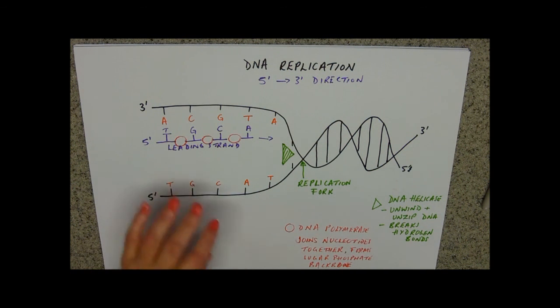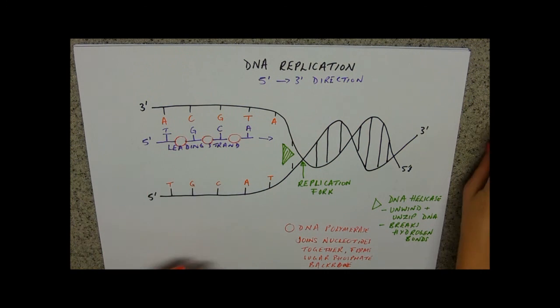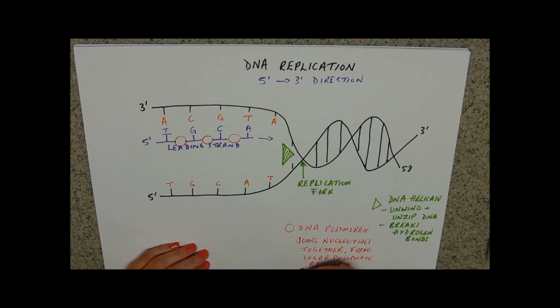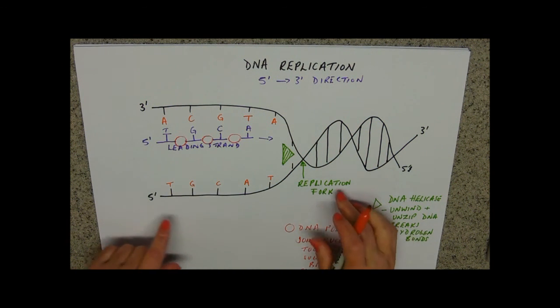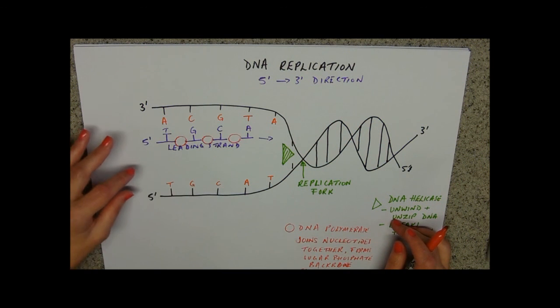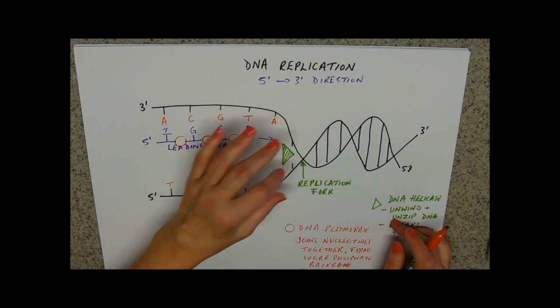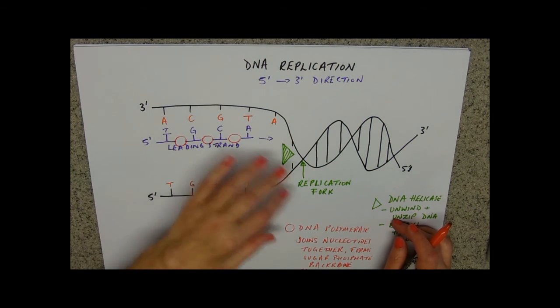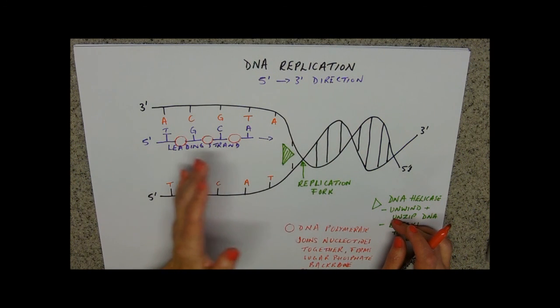But the issue is, if you can only add, so this only works in the five prime to three prime direction, it'll only work going that way. So effectively, it's got to kind of wait until a section of DNA has been opened out before it can start working its way backwards.